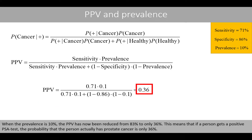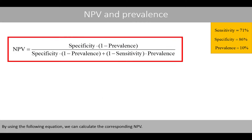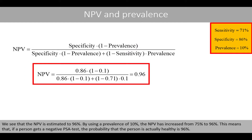When the prevalence is 10%, the positive predictive value has been reduced from 83% to only 36%. This means that if a person gets a positive PSA test, the probability that the person actually has prostate cancer is only 36%. By using the corresponding equation, we can calculate the negative predictive value, which is estimated to 96%. By using a prevalence of 10%, the negative predictive value has increased from 75% to 96%, meaning that if a person gets a negative PSA test, the probability that the person is actually healthy is 96%.